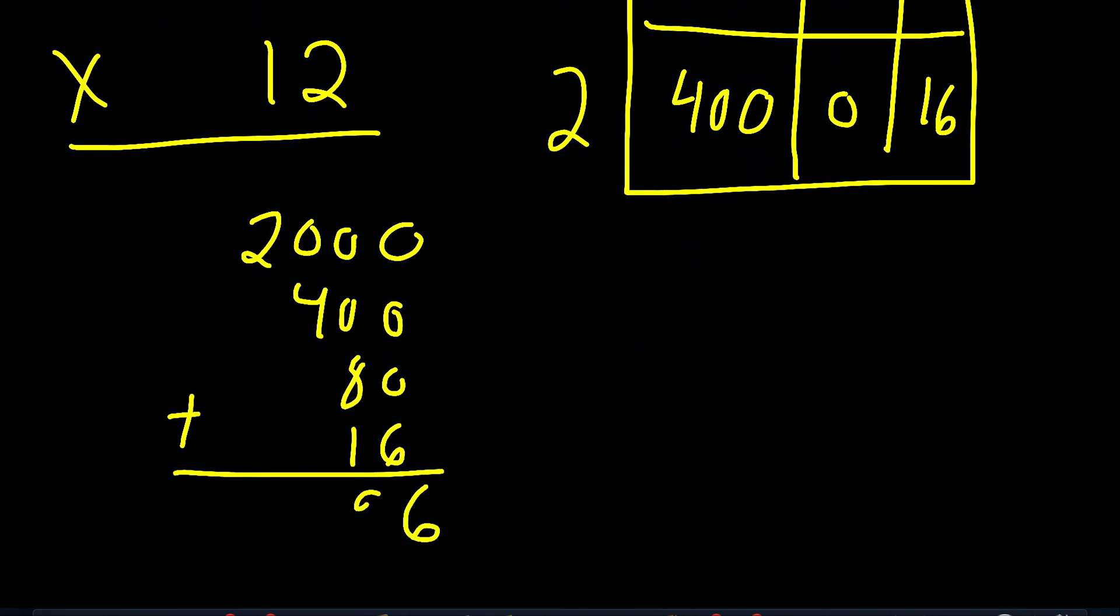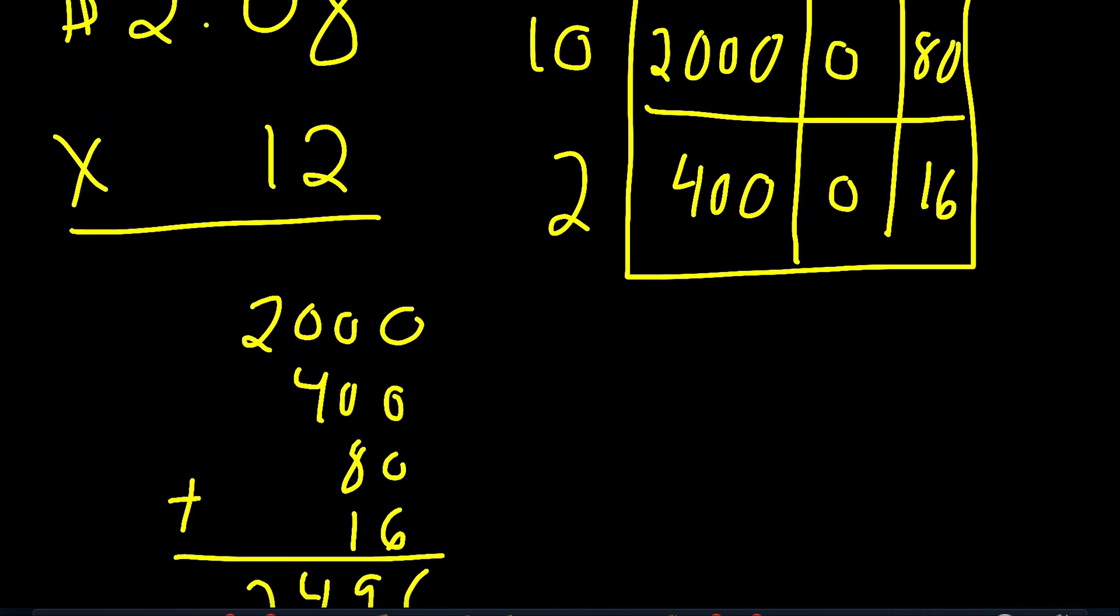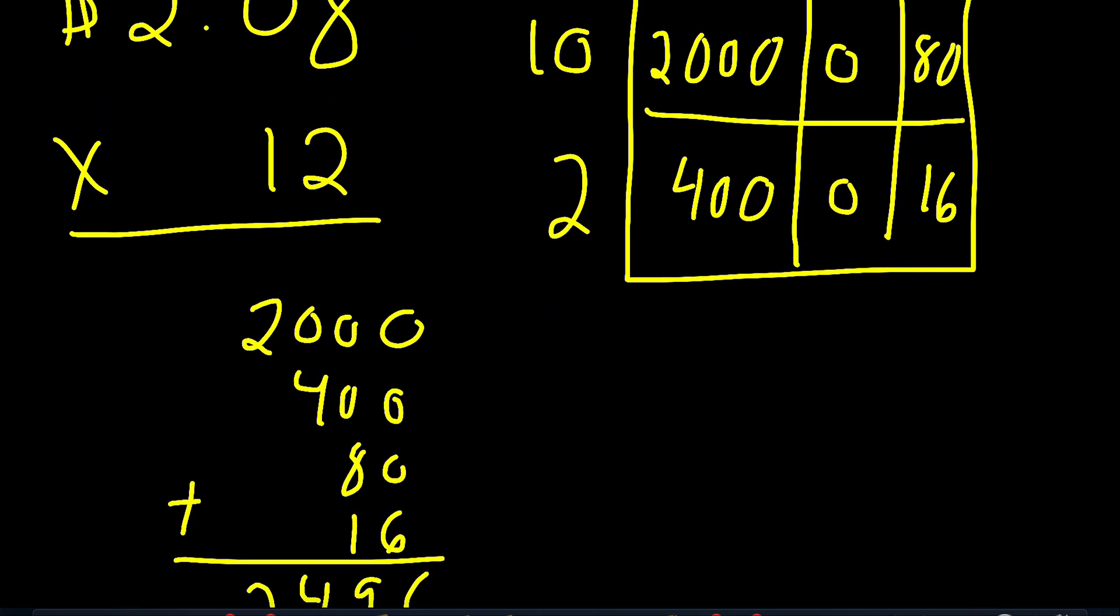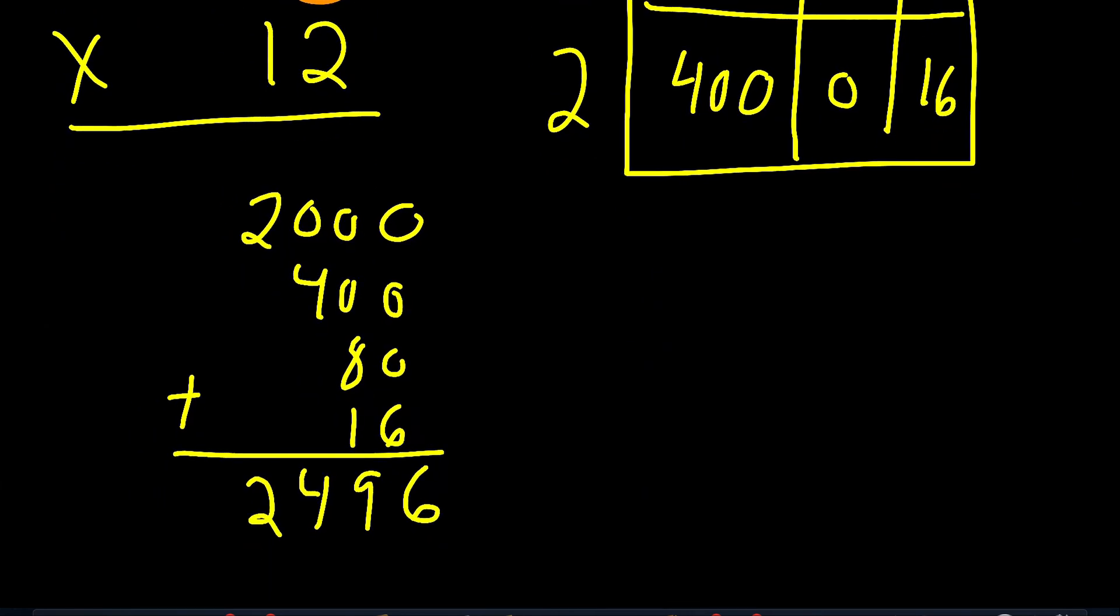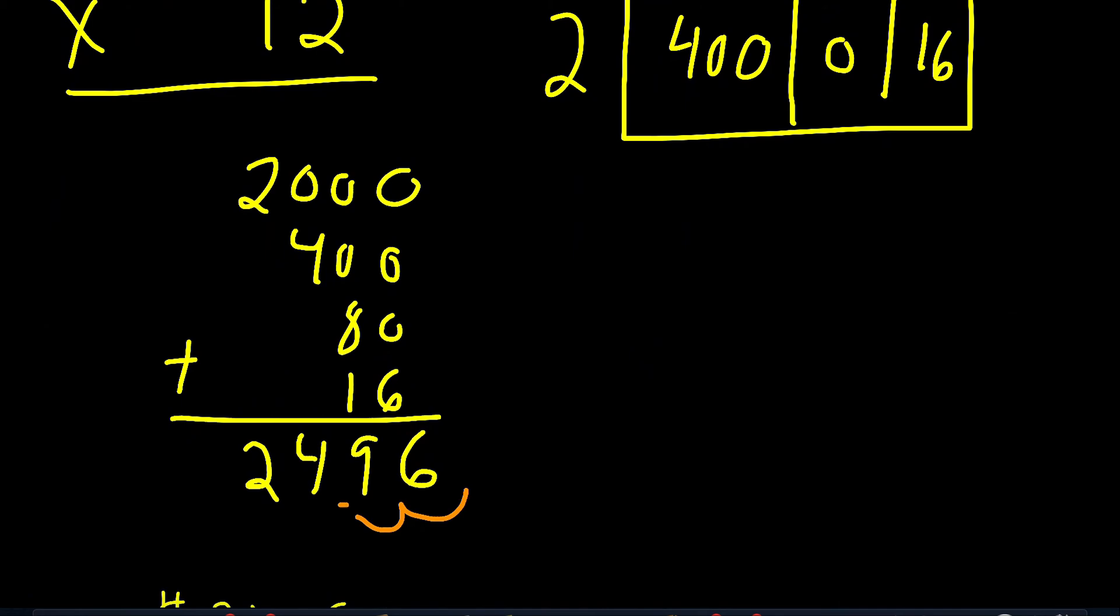Now I'm ready to do my addition. So notice that when I do that, I get 2496. But yep, you know it. We can't leave it like that. We got to remember that decimal. So we go one, two, and then we're going to go one, two. So if you got an answer of $24.96, you are absolutely correct. Way to go.